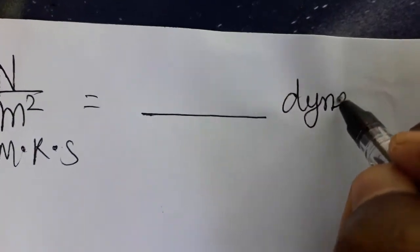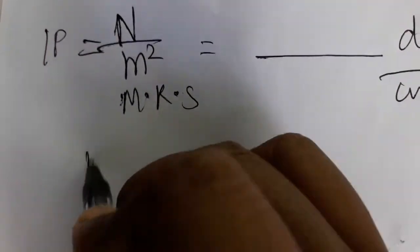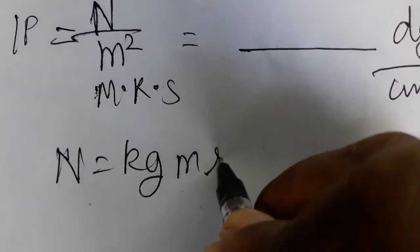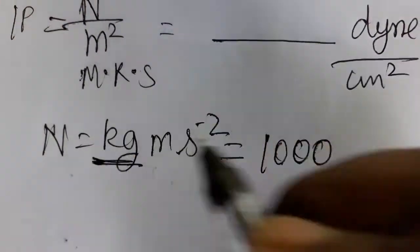This only today we are going to learn. So one Newton, Newton is kilogram meter second minus two. Kilogram is a thousand gram, one kilogram is a thousand gram.